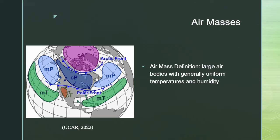Air masses are large air bodies with generally uniform temperatures and humidity, distinguished by the region from which they originated. The air mass will more closely resemble the surface below the source region the longer it stays above it, and they are related to high pressure systems. There are multiple different air masses: arctic, polar, and tropical. Arctic air masses have extremely low temperatures as they reside over the Arctic and Antarctic regions. Polar air masses are not as cold as arctic air masses, but dwell at higher latitudes above land and sea. Tropical air masses reside over lower latitudes and have higher temperatures. Air masses can be distinguished further by whether they are over continents (continental) or over oceans (maritime). An image displaying the North American air masses is shown.